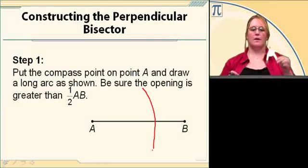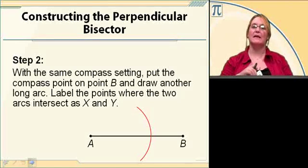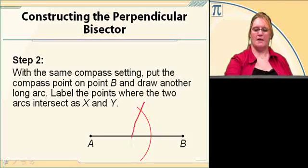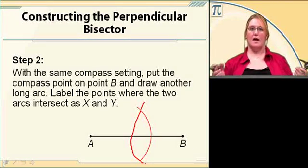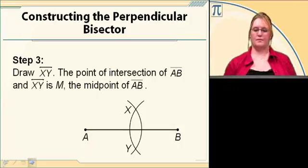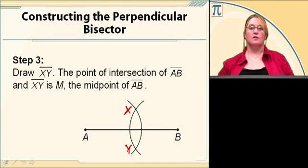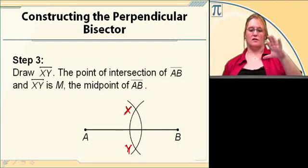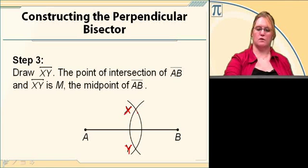Now pick up your compass and put the point on B, and do the same thing — make an arc. Depending on how big you stretch it out, adjust as needed, but you want to make sure the two arcs overlap. Where they cross, it forms two points, which we label X at the top and Y at the bottom.